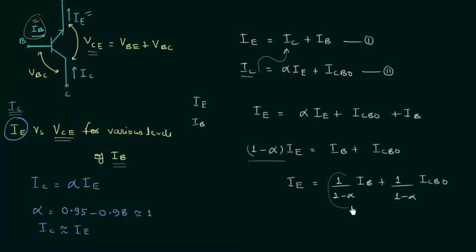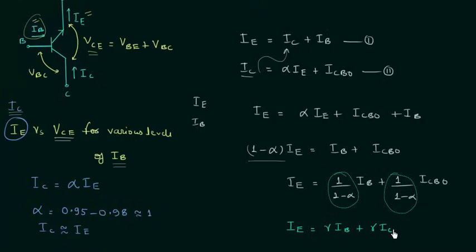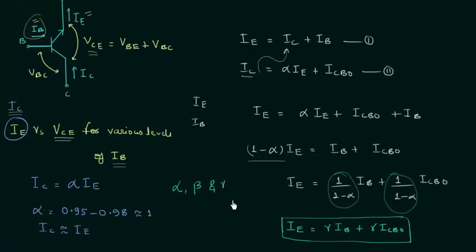So 1 divided by (1 minus alpha) is the current amplification factor gamma in the common collector configuration. This means IE is equal to gamma times IB plus gamma times ICBO. In the next lecture, I will derive the relation between alpha, beta, and gamma. See you in the next presentation.